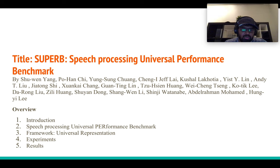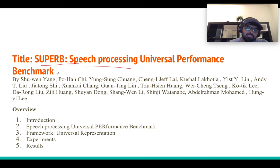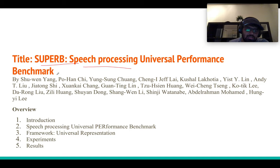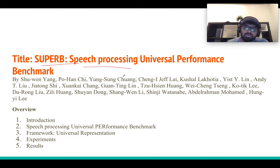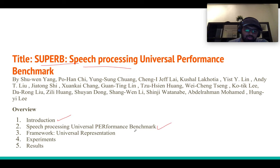Hello everyone, welcome. Today we are going to discuss a recent paper called SUPERB: Speech Processing Universal Performance Benchmark. This paper was released in May, and the authors are from many universities and industries — MIT, JHU, National Taiwan University, and CMU — as well as companies including Facebook AI Research and Amazon AI. We'll first look at the introduction, then the benchmark idea, then the framework, and finally some experiments and results.